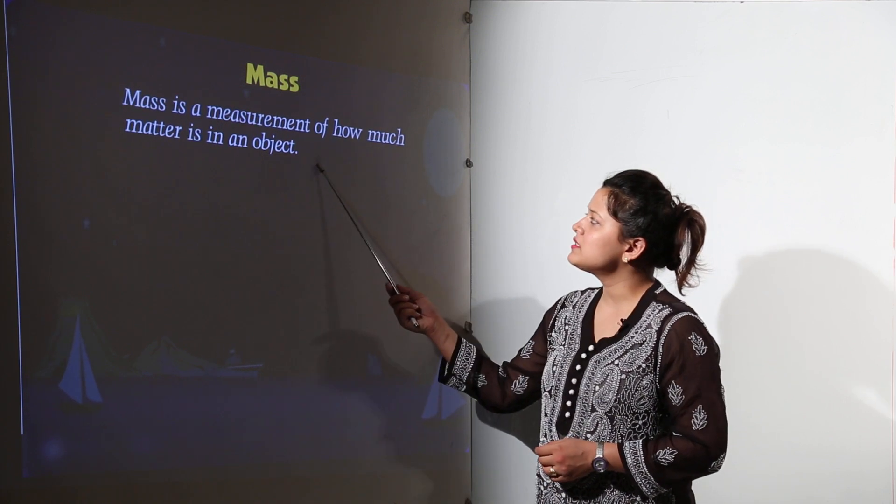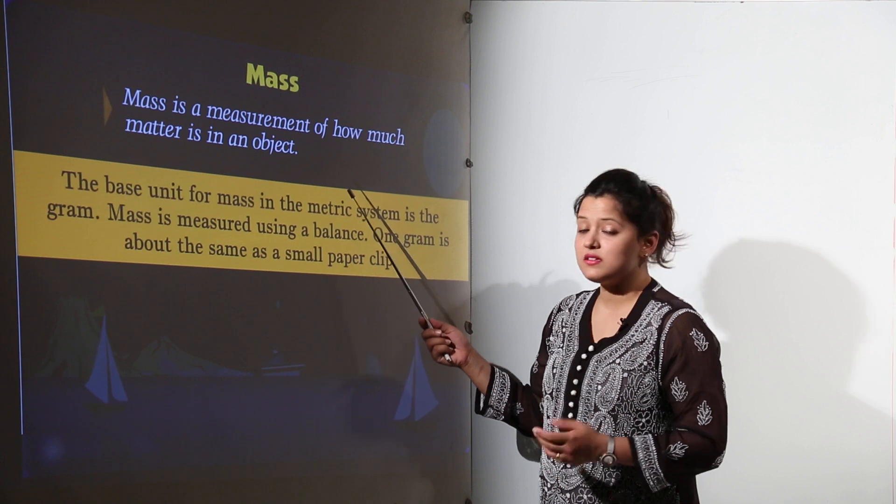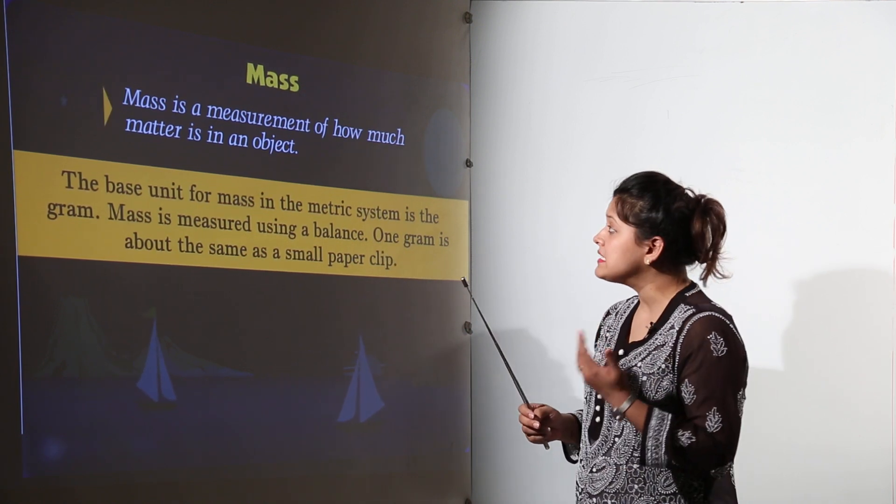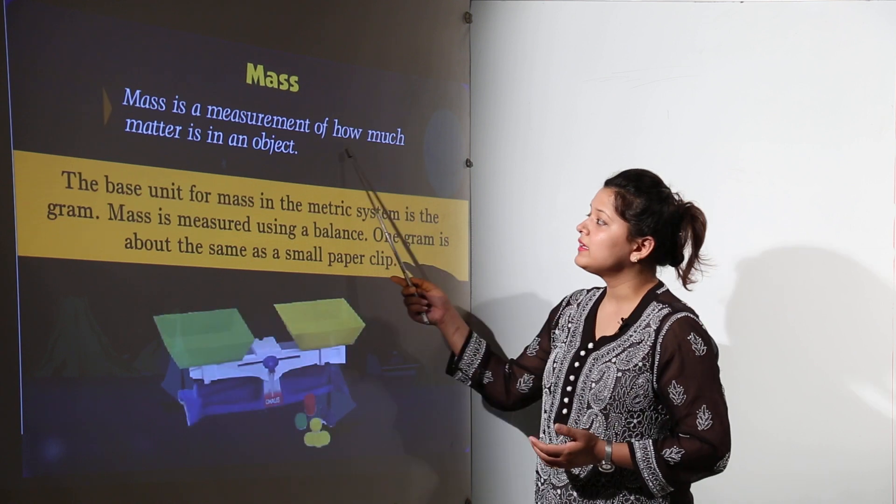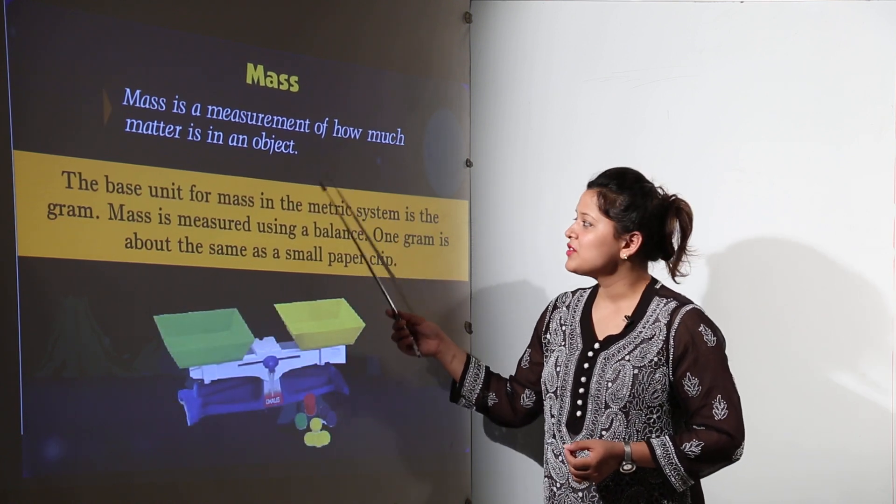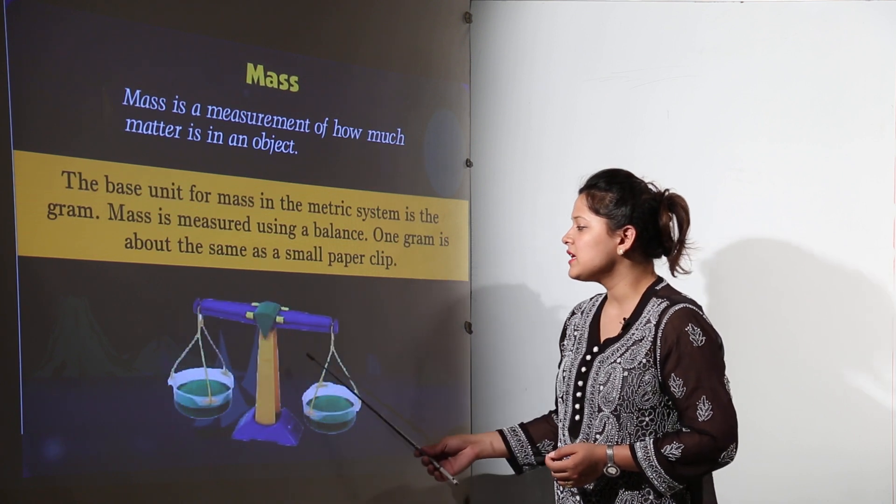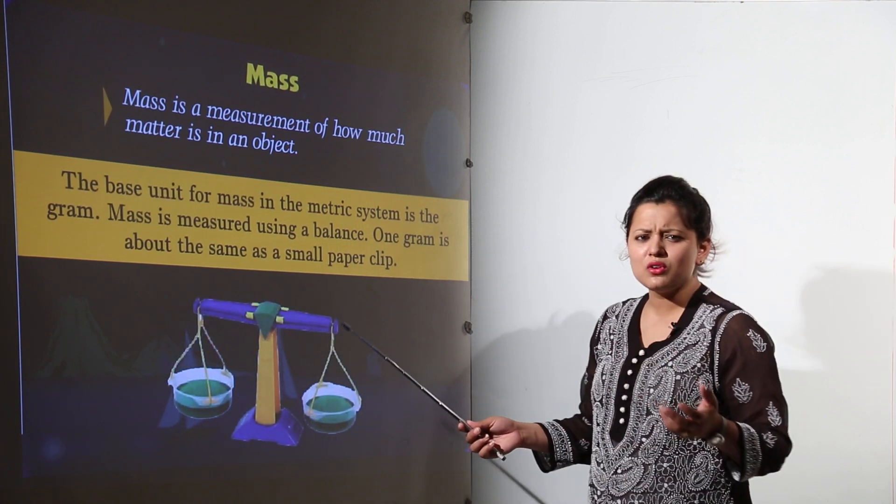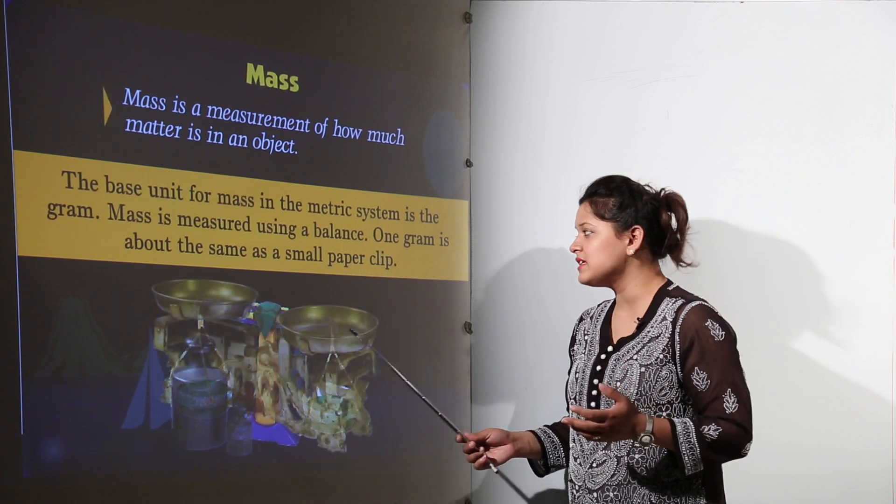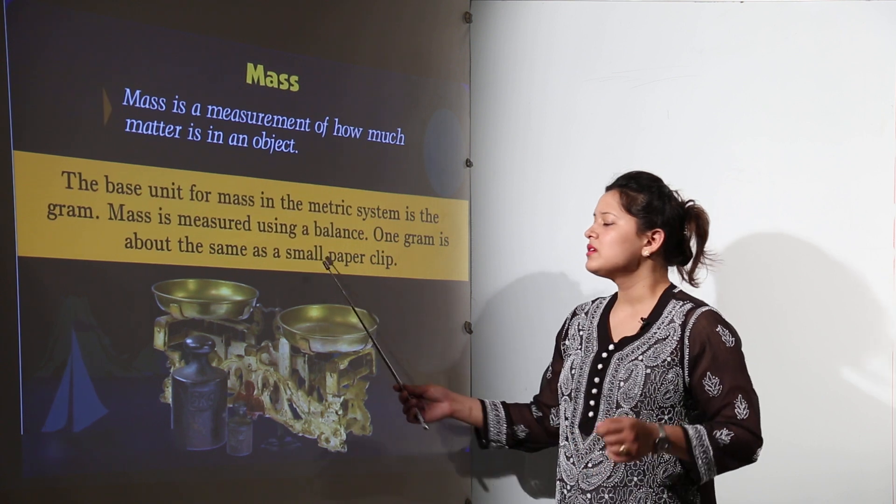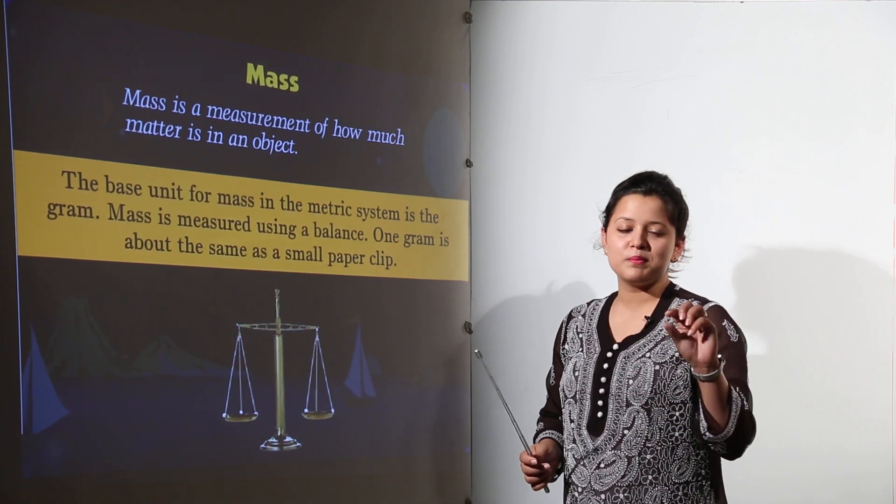The mass is the measurement of how much matter is in an object. An object is having how much of matter that will be its mass. So the base unit for mass in metric system is grams and it can be measured on the balance. We can observe it with the vegetable sellers these days most commonly.